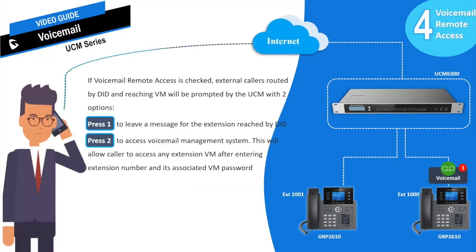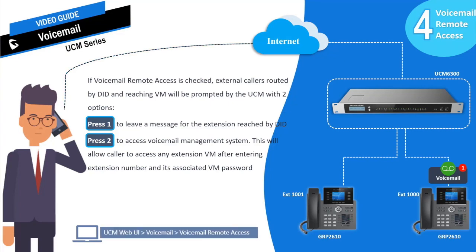The UCM now supports the option to access voicemail messages remotely by enabling voicemail remote access. When enabled, when callers from external numbers are directed to leave a voicemail, the UCM will prompt the caller to press 1 to leave a message or press 2 to access the voicemail management system. Option 2 allows the caller to enter the extension number of the desired voicemail box and the associated password, giving access essentially equivalent to dialing the voicemail access code from an internal extension.